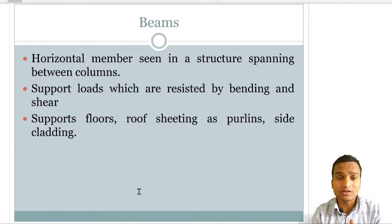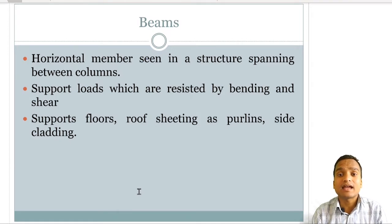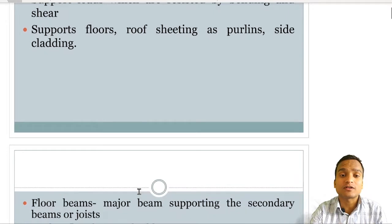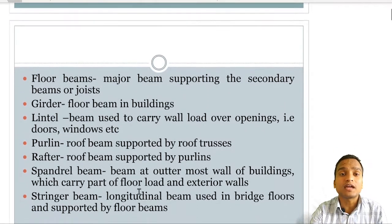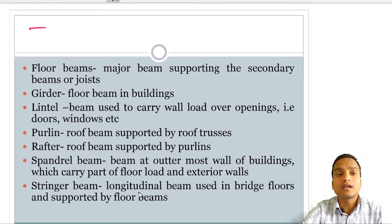Similar actions also occur in steel beams, and they normally support floors, roof seatings, purlins, and side claddings. There are different types of beams which are commonly seen in structures.